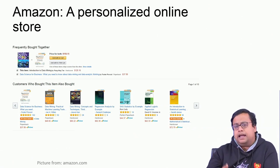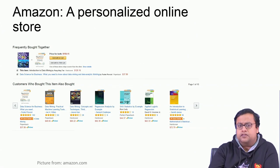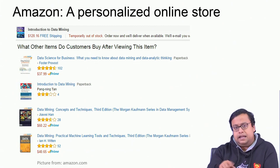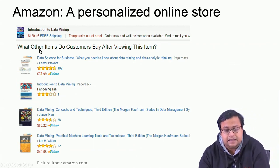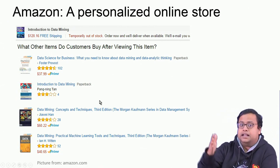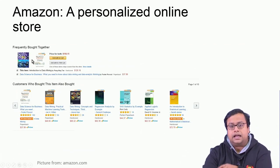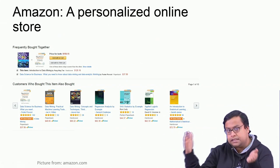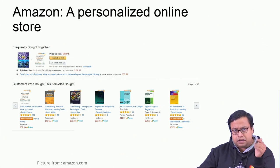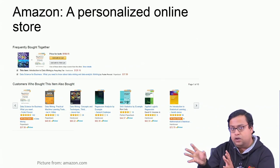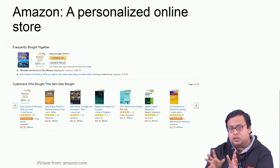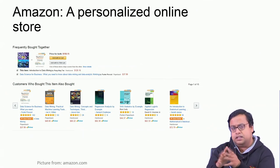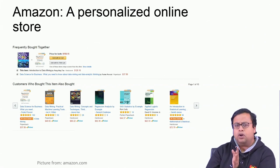Different recommendation engines require different source data. For 'viewed then bought,' you must collect customer viewing data and match it with purchase data. For 'bought together,' only same-basket data is used. For 'also bought across trips,' products A and B can be in different baskets but both must be purchased. The primary raw dataset differs across these three cases, though the algorithm remains broadly the same.